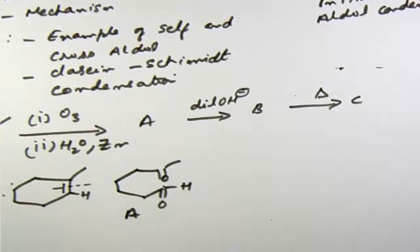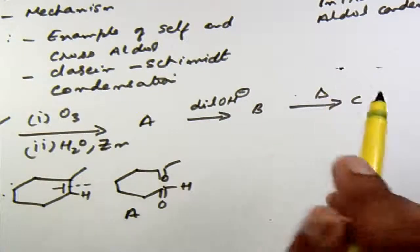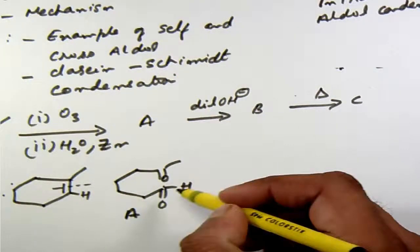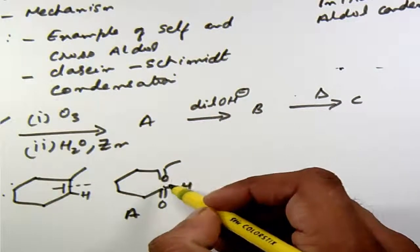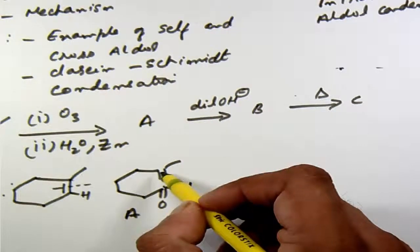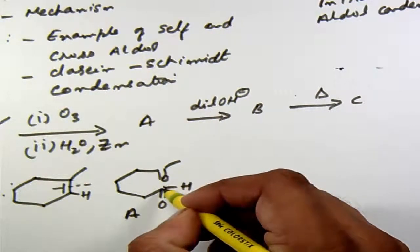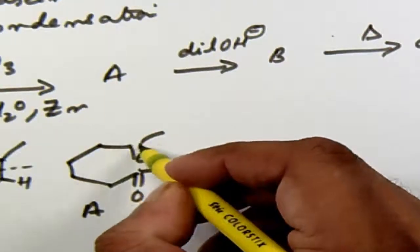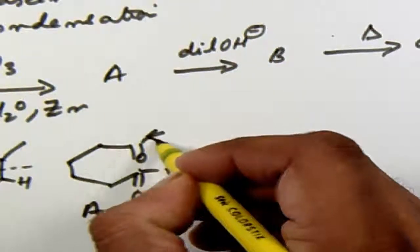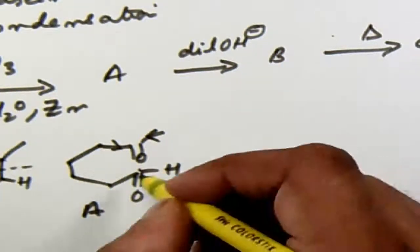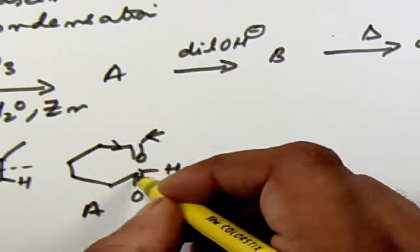In this, as discussed in part two when we discussed the self and the cross aldol, I had mentioned that whenever you have two different carbonyl compounds, one is an aldehyde other is a ketone, it is the aldehyde carbon which will be more electrophilic compared to that of the ketone because of two plus I effects on the ketone that makes the carbon less electrophilic. This carbon is less hindered as well as more electrophilic.